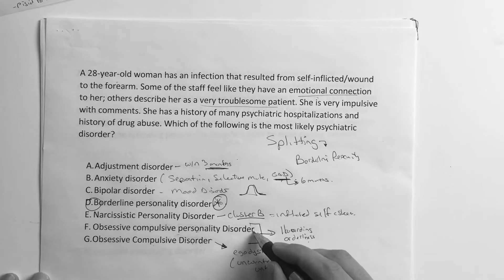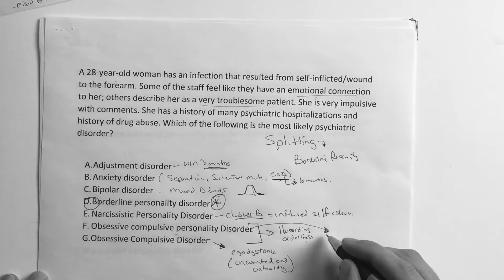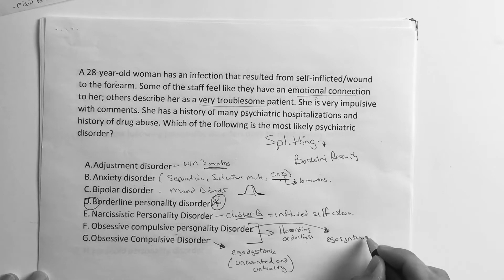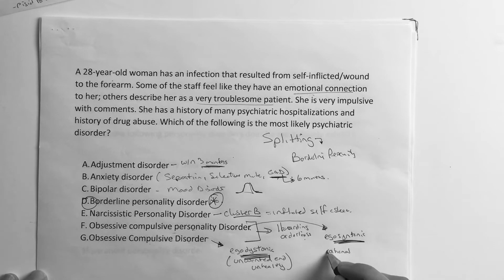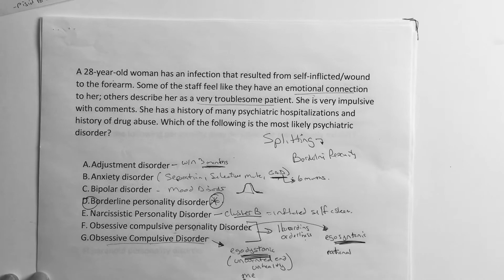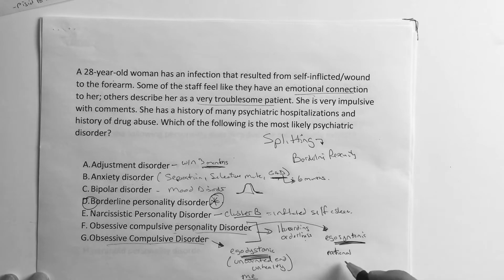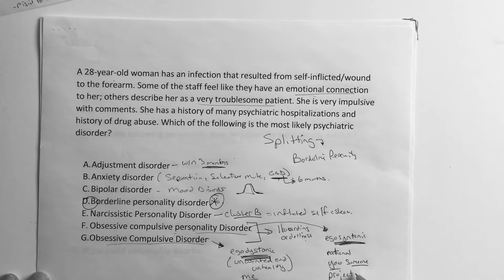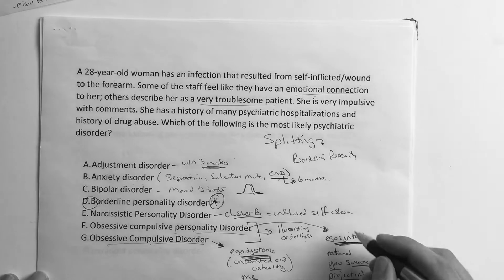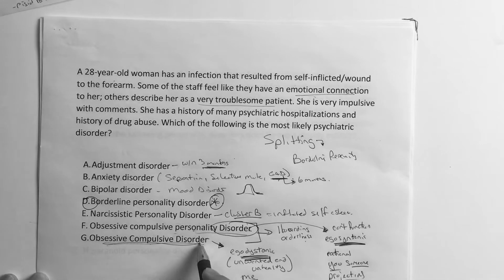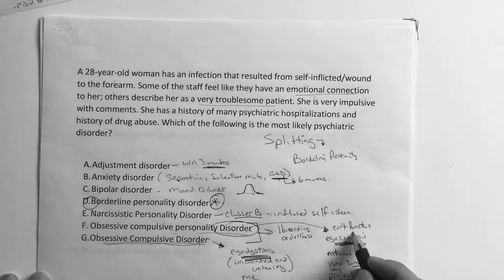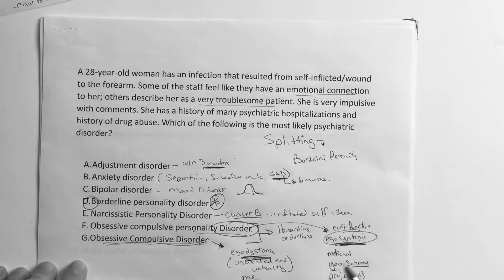Now the person with obsessive compulsive personality disorder is ego syntonic — everything they do seems rational to them. They could ask a nice little question on that. In someone who's OCD, they understand the problem is themselves. But in someone with the personality disorder, the problem isn't them — the problem is you, someone else. They're really good at pointing the finger and projecting onto other people. And these people can function, but they like to throw that in there. OCD: ego dystonic. OCPD: ego syntonic, can function, the problem is somebody else.